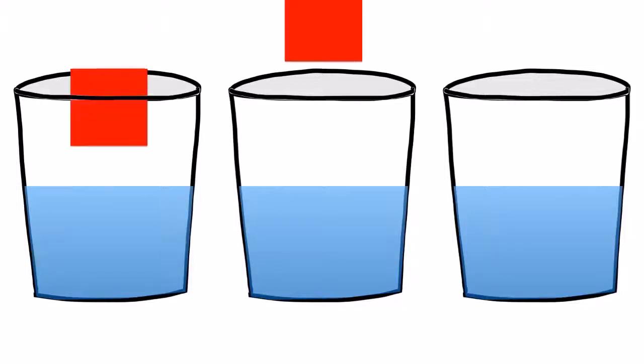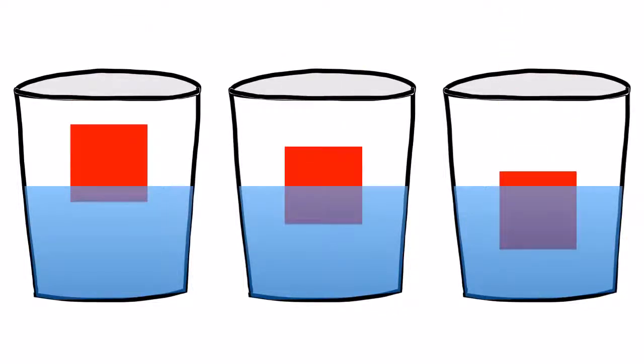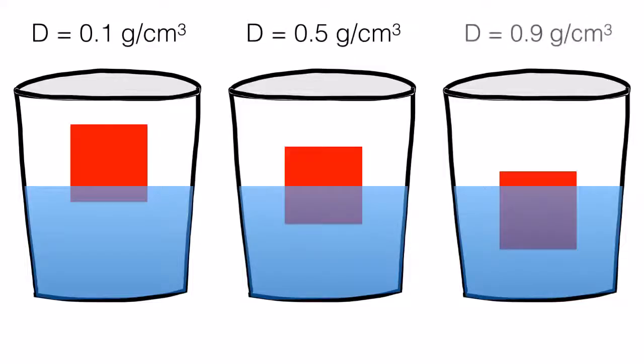Take a look at these three objects. All of them float, so their densities are less than one.